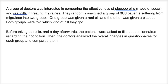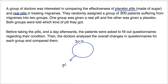So they randomly assigned a group of 300 patients suffering from migraines into two groups. They have their 300 patients right over here, and they're randomly putting them into the placebo group or the real pill group.